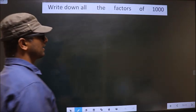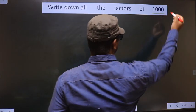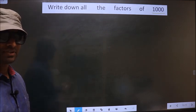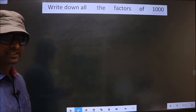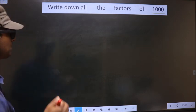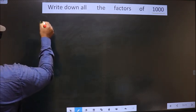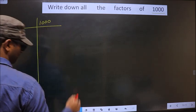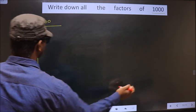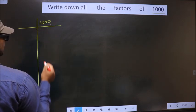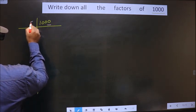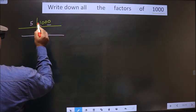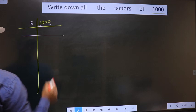Write down all the factors of 1000. To write all the factors of 1000, first we should do the prime factorization of it. So 1000 — for this number, the last digit is 0, so we take 5 here. The first digit is 1, which is smaller than 5, so we take 2 numbers, that is 10.